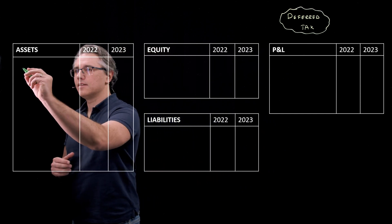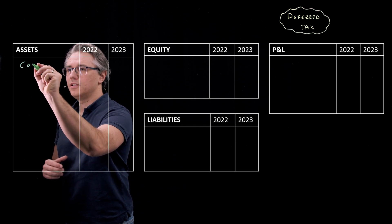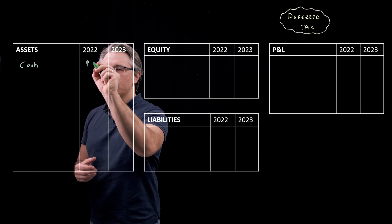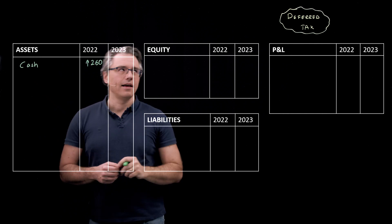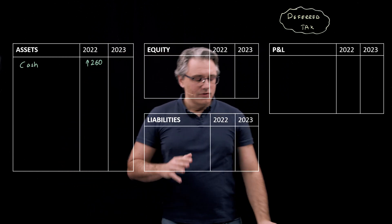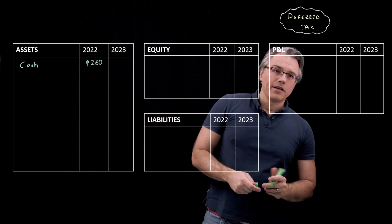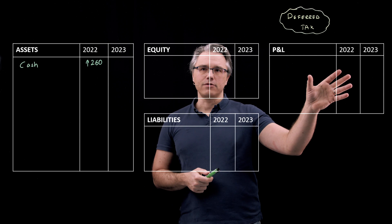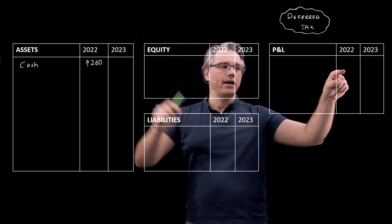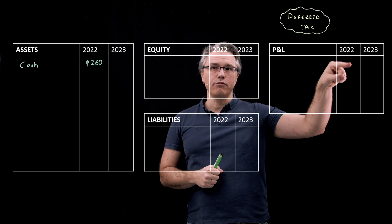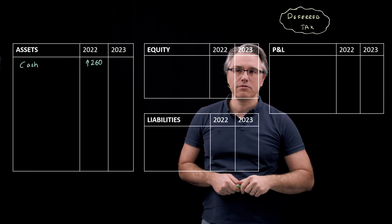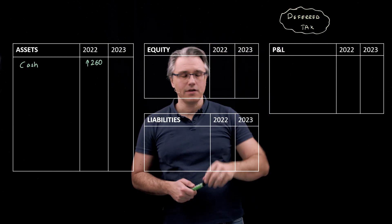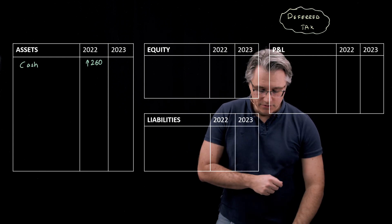Heading to the assets section, the company received cash in 2022 — an inflow of €260,000. If this were income recognized in the P&L for 2022, this would correspond to a plus sign in the 2022 column within P&L, and that would later be transferred into equity as something positive within retained earnings, causing the balance sheet to balance.